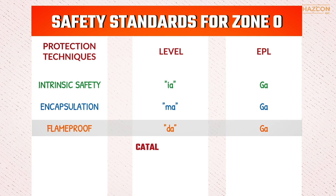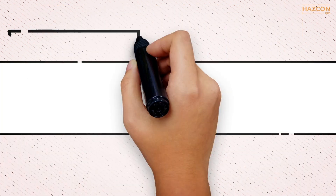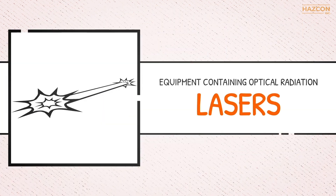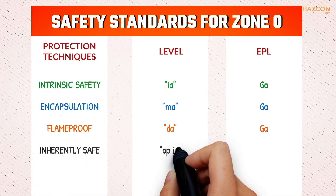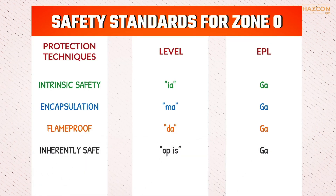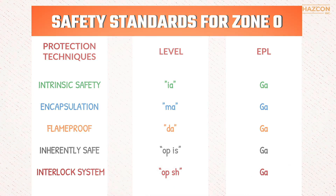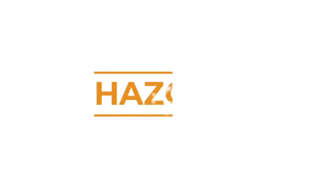Note that flame proof protection applies only to portable combustible gas detectors with catalytic sensors. Additionally, equipment containing optical radiation such as lasers can be installed in Zone 0 if optical power is inherently safe using opis protection, or using an interlock system complying with opsh protection for Zone 0.